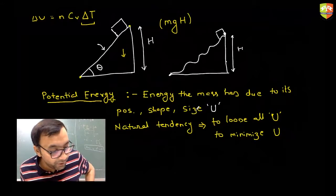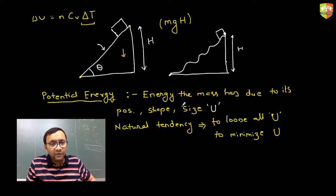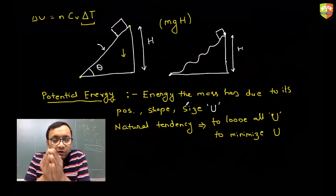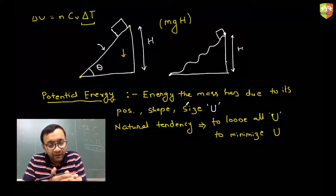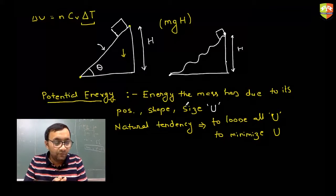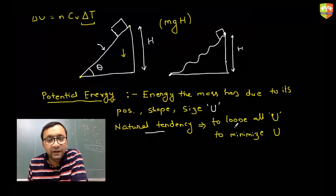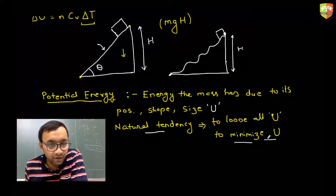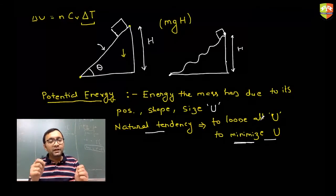How does shape affect potential energy? The spring is the best example. You compress it — its shape changes. If its shape is changed, it has energy, and you know it has energy because if you release it and there is a mass connected, it will transfer its potential energy and create kinetic energy for the mass. So every object has a natural tendency to minimize potential energy, and given the chance, it will give up all its potential energy, manifesting as kinetic energy.